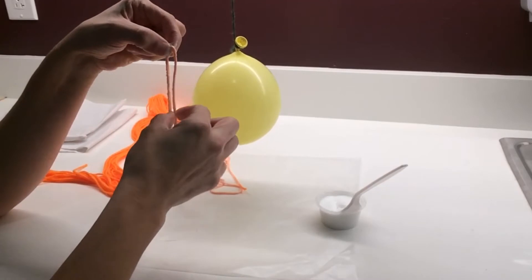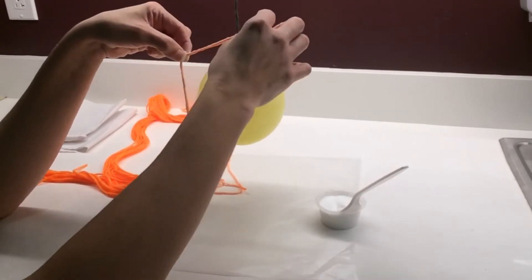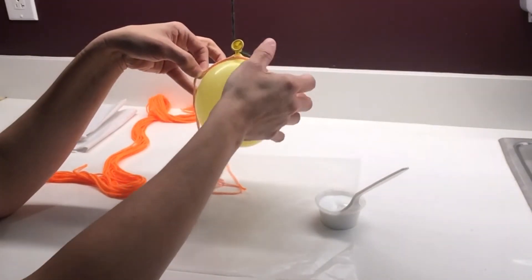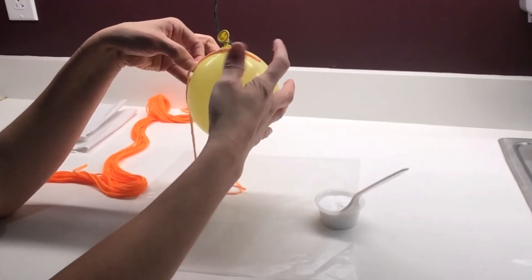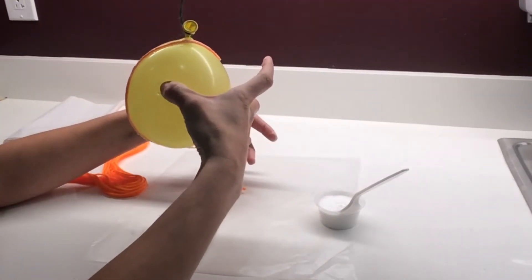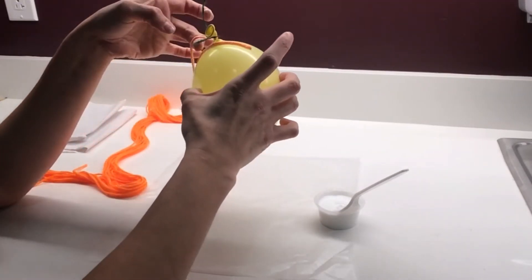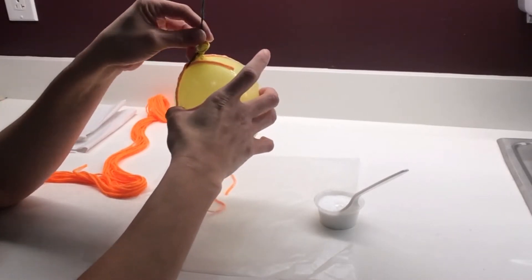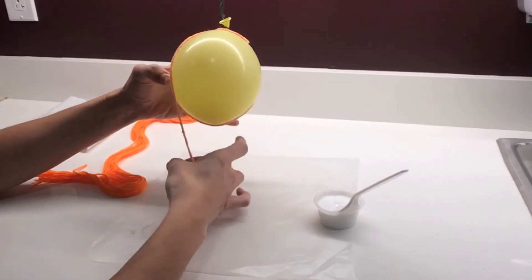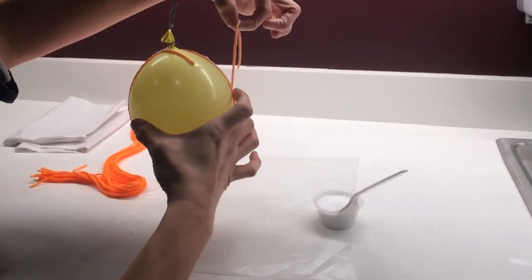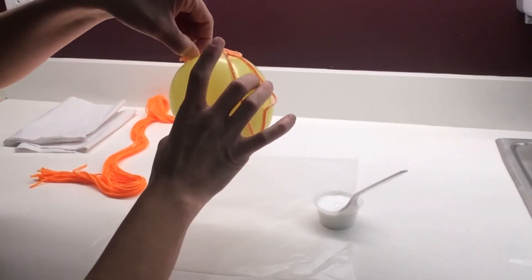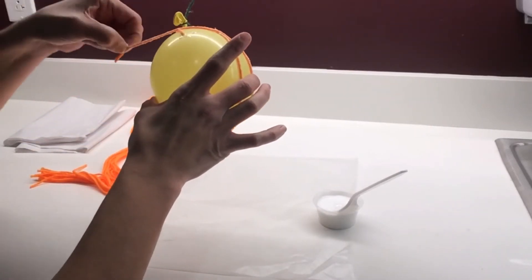And then you're going to take your glue covered piece of yarn and wrap it around the balloon. Starting from the top and working your way down is one of the easier ways to do it. And just start wrapping, and you're going to eventually cover the whole balloon in different zigzag patterns.